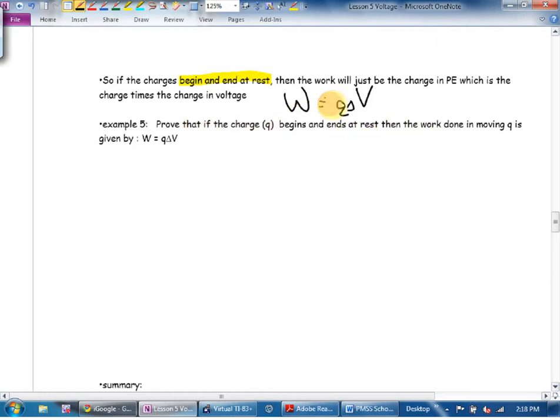So, it says, prove that if the charge Q begins and ends at rest, then this equation is true. Well, we said this. Work is equal to change in potential plus change in kinetic. Except, Sophie, if you start and end at rest, that's zero. What's change in anything? I'm not going to use that. Instead, what I'm going to say is, and I also know this. The change in voltage is equal to the change in energy per Coulomb. That's on your formula sheet, I believe. Is it not?